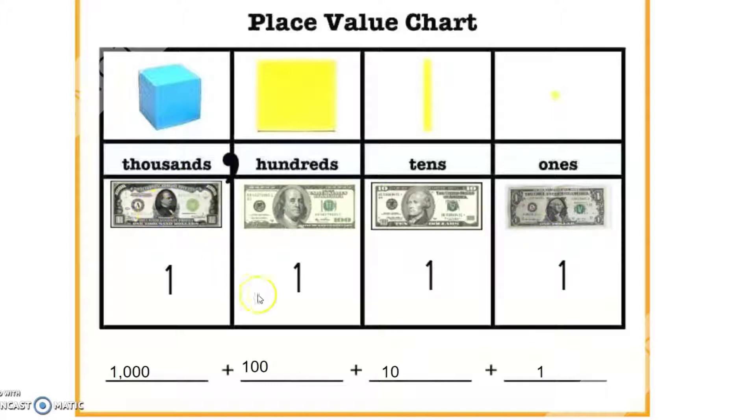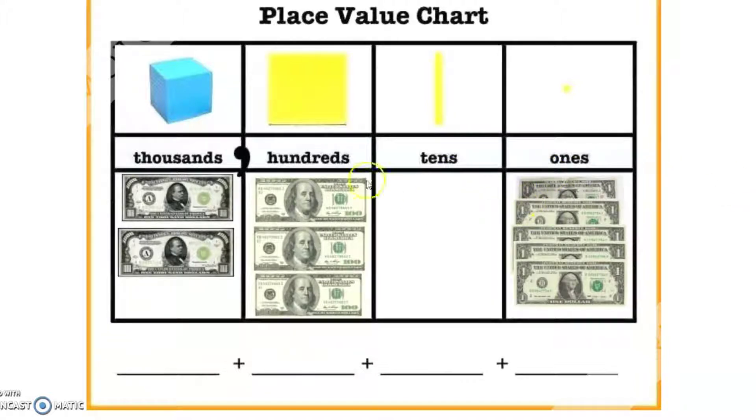you much rather have what's in the thousands place? When we put it all together, we come up with a value of $1,111. So what happens when our values increase, or when we have nothing in one of our place values?